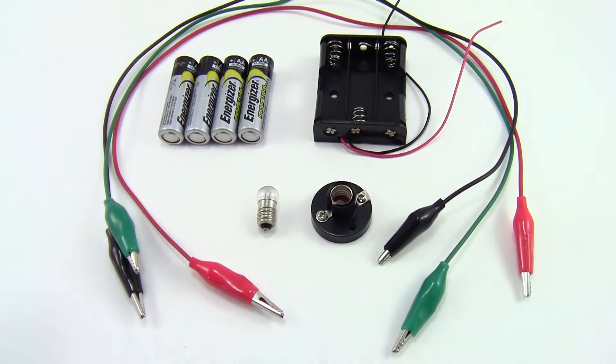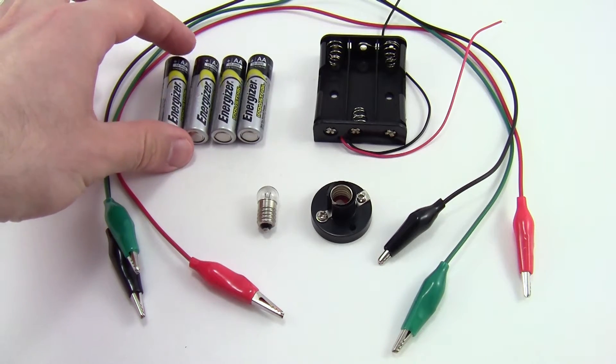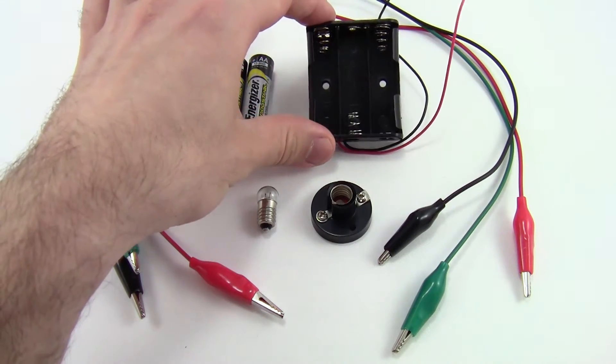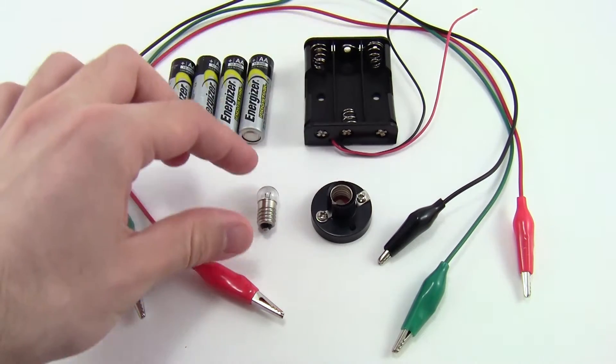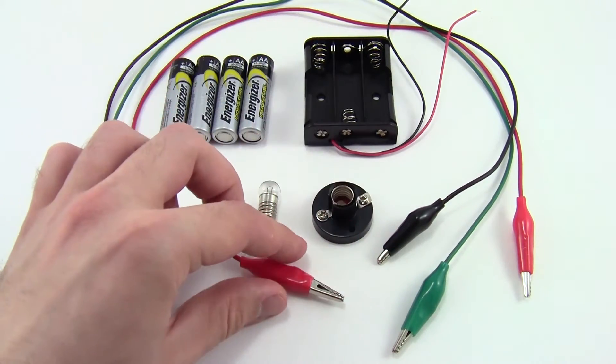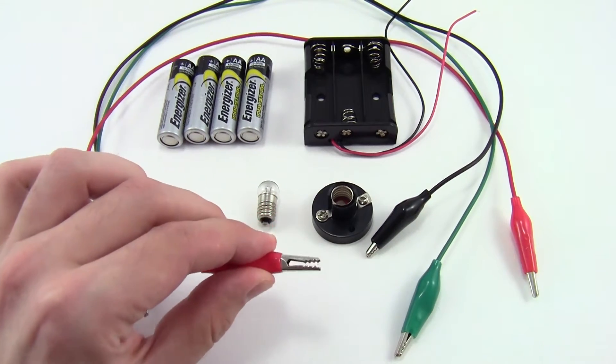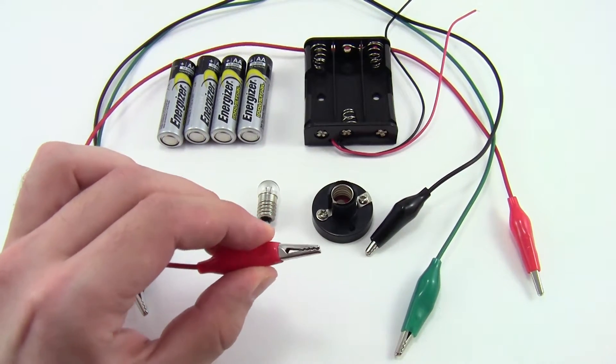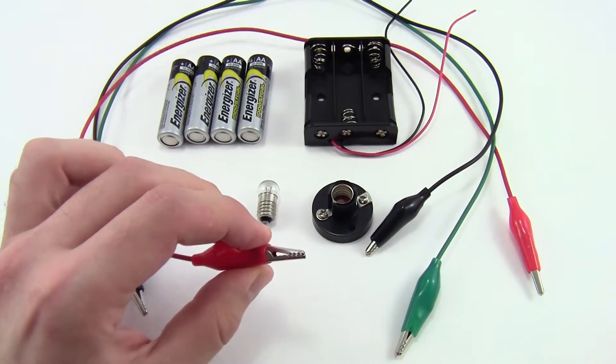So here we have all the parts in the kit. You have four AA batteries. You have a three AA battery holder, so your kit comes with one extra battery. You have a small light bulb, a light bulb base, and three alligator clips, which get their name because they have these little metal jaws that can grab onto wires and circuit components.